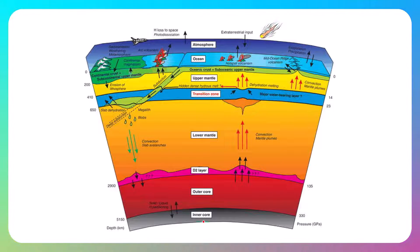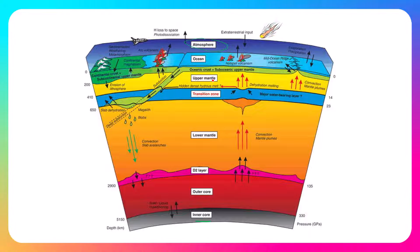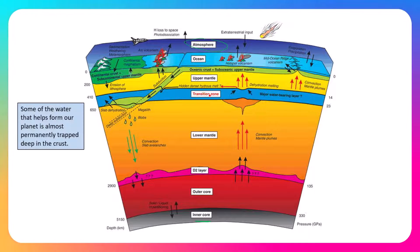If we look at the crust and the layers from the inner core all the way out to the atmosphere, the bulk of the liquid water is contained within the outermost layer — accessible water at the surface including oceans, rivers, lakes, ponds, and streams. However, there is a major water-bearing layer in the upper and lower mantle region that is not easily accessible — some of the water that helped form our planet is almost permanently trapped deep in the crust.